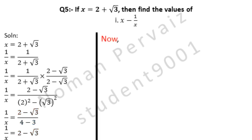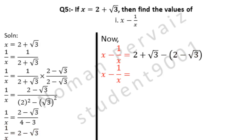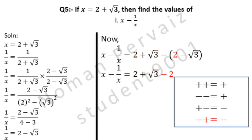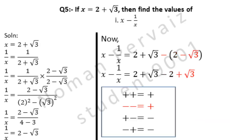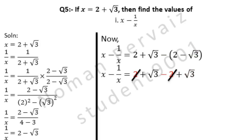Now, look at part 1. We take x minus 1 over x, and replace the values: x is 2 plus under root 3, minus, and 1 over x is 2 minus under root 3. Expanding: 2 plus under root 3 minus 2 plus under root 3. Plus 2 and minus 2 cancel. Plus under root 3 and plus under root 3 gives 2 under root 3. Hence, x minus 1 over x equals 2 under root 3. This value is carried into part 2.